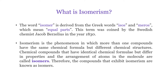The word isomer was derived from two different Greek words, isos and meros, which means equal parts. This term was first coined by a Swedish chemist Jacob Berzelius in the year 1830. Isomerism is a phenomenon in which a compound can exist with different structures — compounds having similar molecular formula but different structures. The compounds are called isomers, whereas the phenomenon is called isomerism.